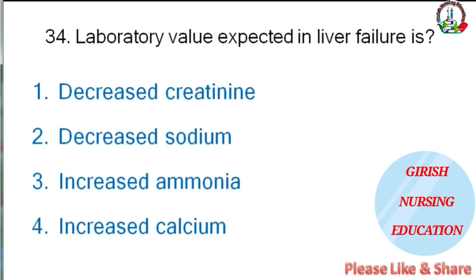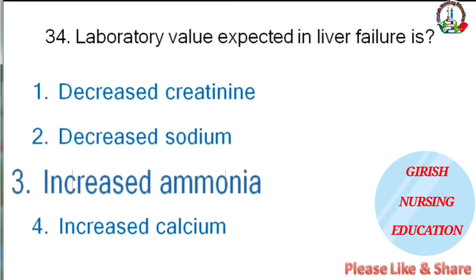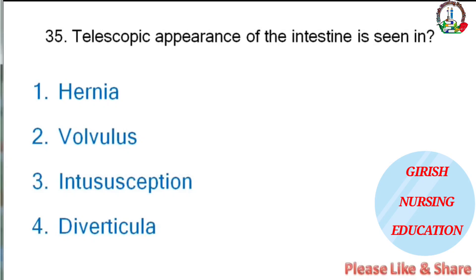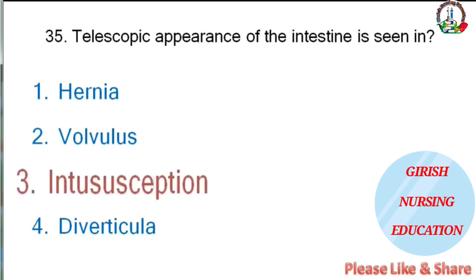Laboratory value expected in liver failure — decreased creatinine, decreased sodium, increased ammonia, or increased calcium? The correct answer is increased ammonia. Telescopic appearance of the intestine is seen in — hernia, volvulus, intussusception, or diverticulosis? The correct answer is intussusception.